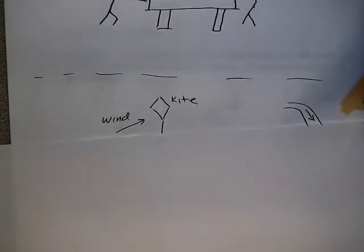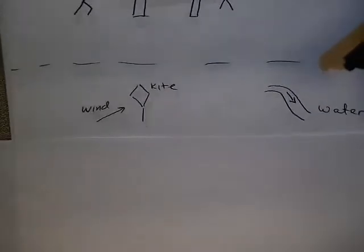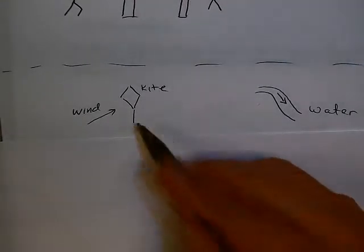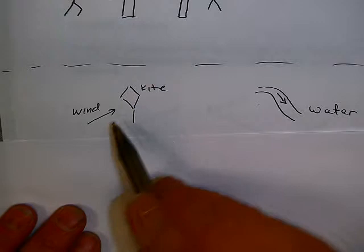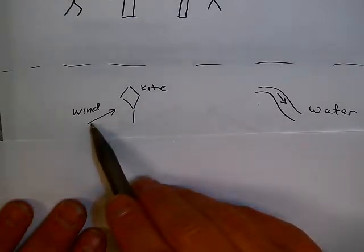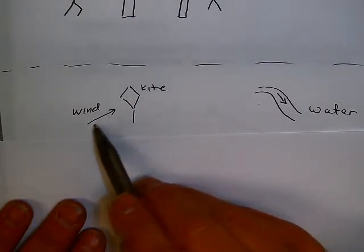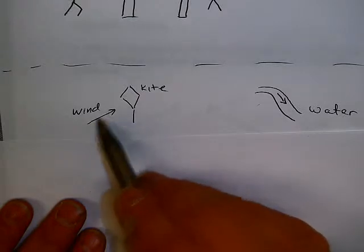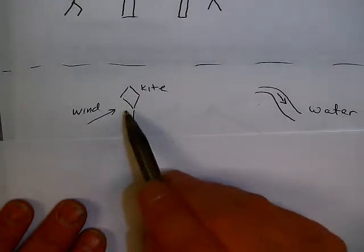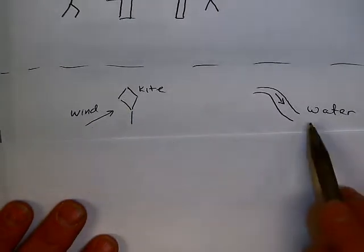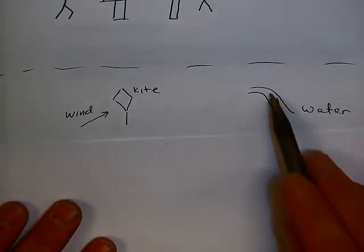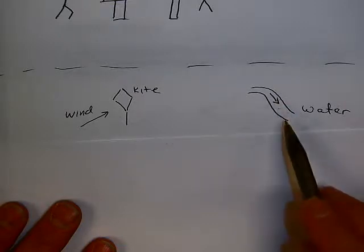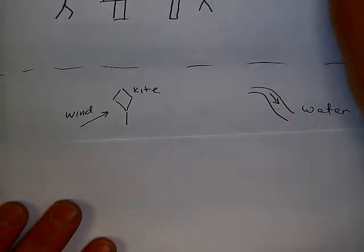Another, perhaps less violent example, might be the notion of a kite in the air. If you have a kite in the air, it is being pushed by the wind, and the wind has a certain magnitude and direction. Or think about water falling down a waterfall — it might be going at a certain speed, representing the magnitude of the vector, and of course it is going in a certain direction.